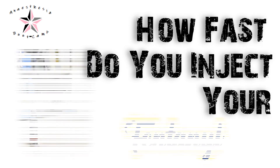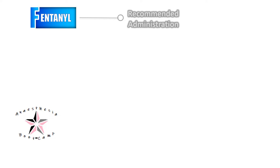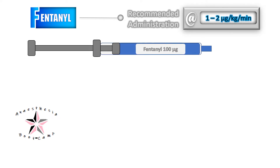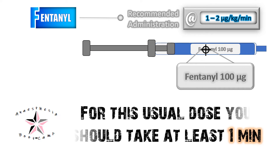How fast do you inject the fentanyl? The recommended rate of administration is 1 to 2 micrograms per kg per minute. That means a usual premedication dose of 100 micrograms should last for at least 1 minute.